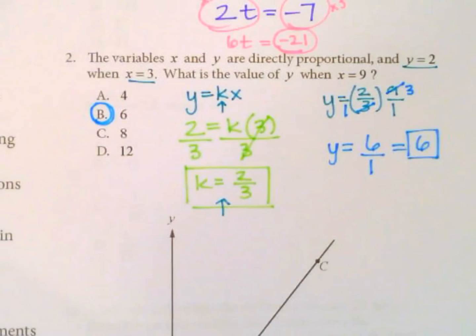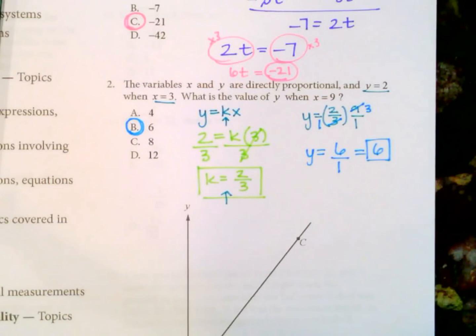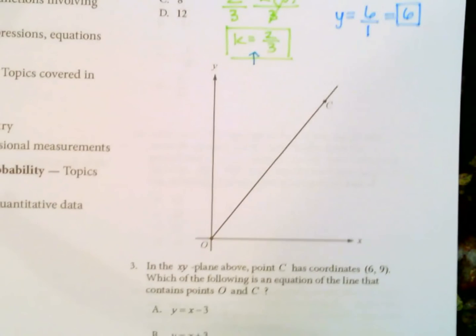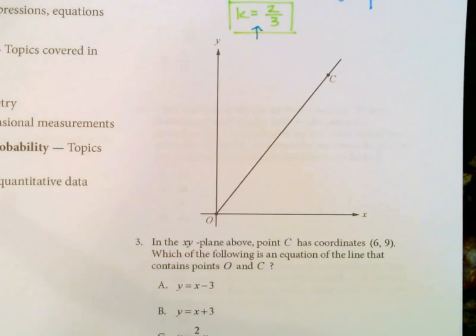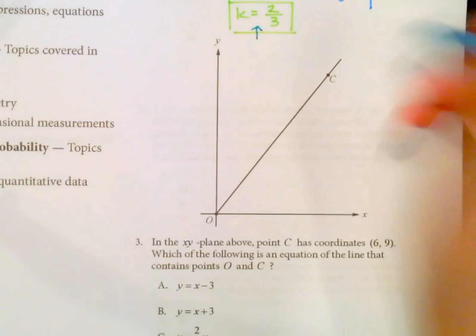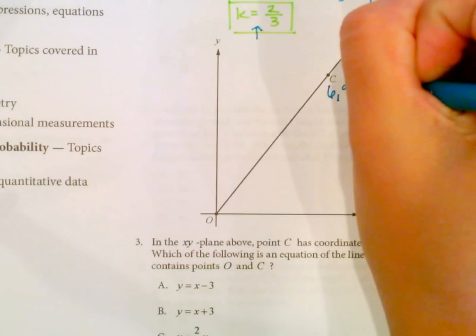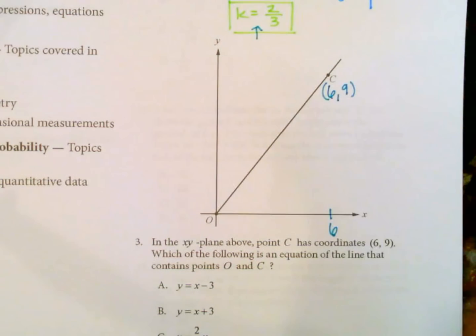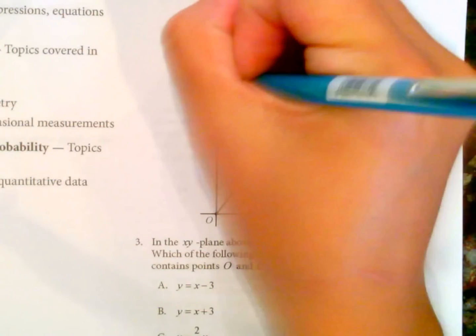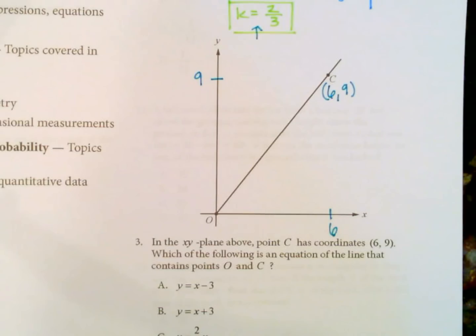Number 3. Let's zoom out real quick. Okay, number 3. In the xy plane above, point C has coordinates 6, 9. So I'm going to go ahead and label that. 6, 9, which means this is 6. The x value is 6. The y value is 9 at this point.